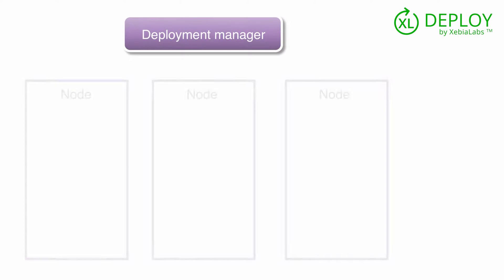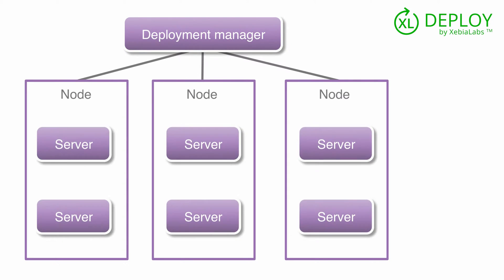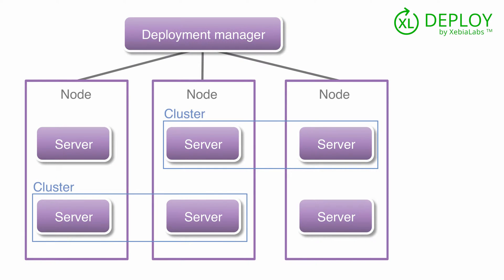First, let's see how deployment to WebSphere is done. In a WebSphere network deployment setup, you use a deployment manager to manage nodes. Nodes are where servers are installed. You can also organize servers in logical groupings called clusters. Artifacts such as EAR files can be deployed to servers or clusters, and resources such as data sources and JMS queues can be defined for nodes, servers, or clusters.